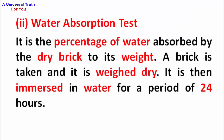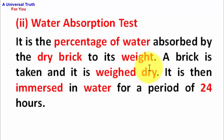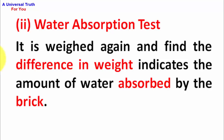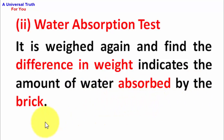Number 2 - Water Absorption Test. It is the percentage of water absorbed by the dry brick relative to its weight. A brick is taken and weighed dry. It is then immersed in water for a period of 24 hours. It is weighed again and the difference in weight indicates the amount of water absorbed by the brick.